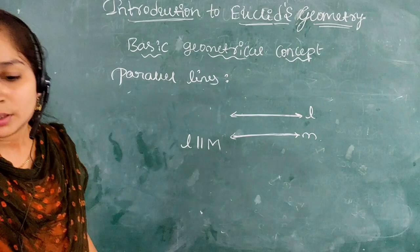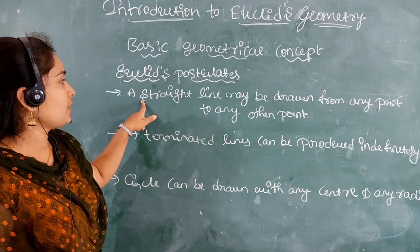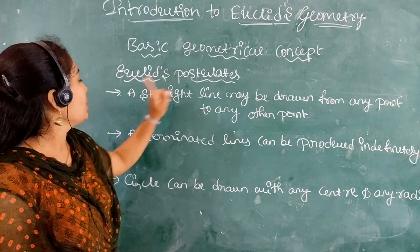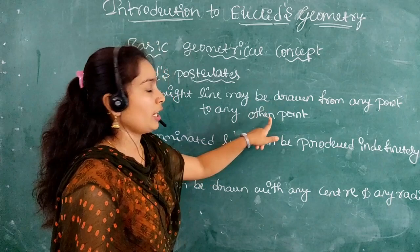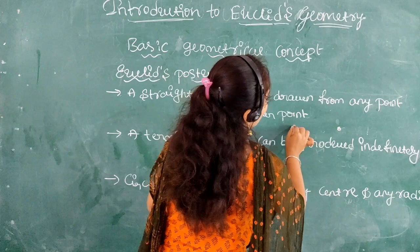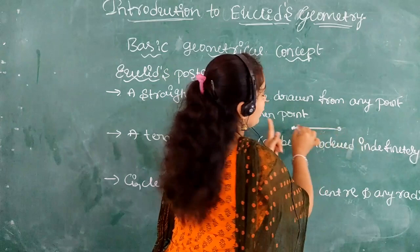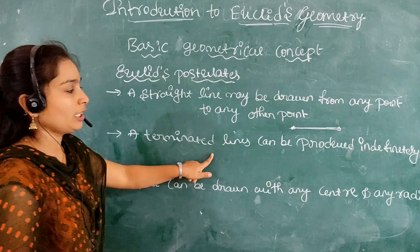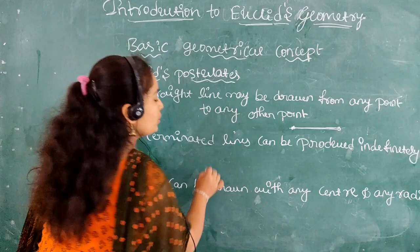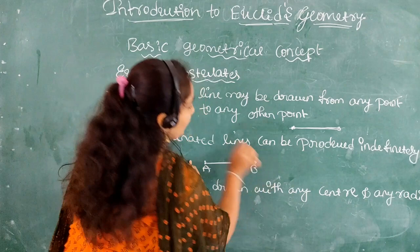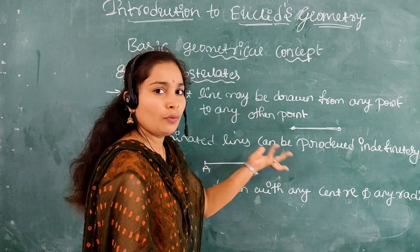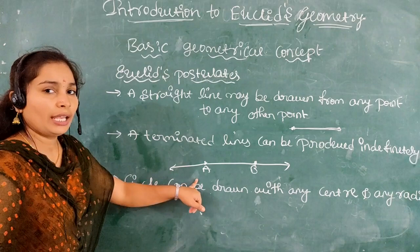The next topic is Euclid's Postulates. The first postulate: a straight line may be drawn from any point to any other point. Take any two points and draw — you will get a straight line. The second postulate: a terminated line can be produced endlessly. Draw a terminated line AB; it can be extended indefinitely on both sides.